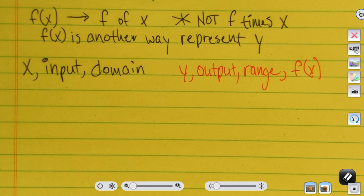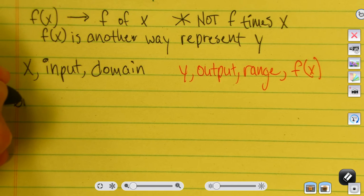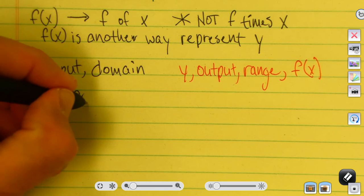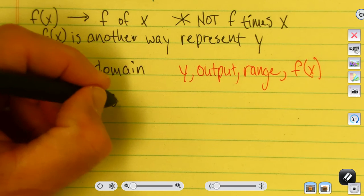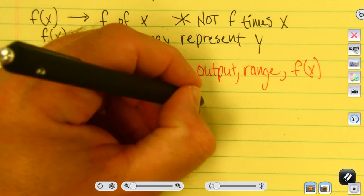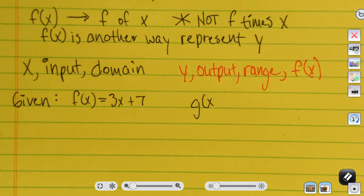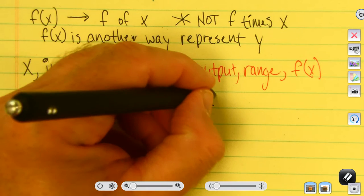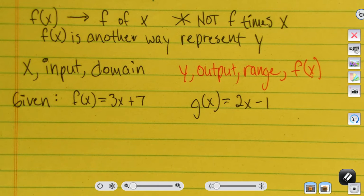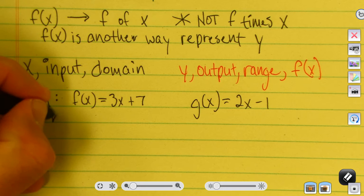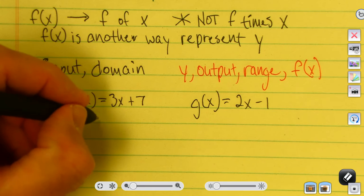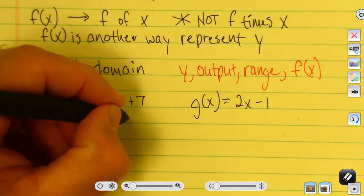Let's look at how we use function notation to represent a function. I'll give you several functions. The first is f of x equals 3x plus 7. The next one I'll call g of x — that way I can distinguish the two. f of x is the first one; g of x is the second one, and it's 2x minus 1.